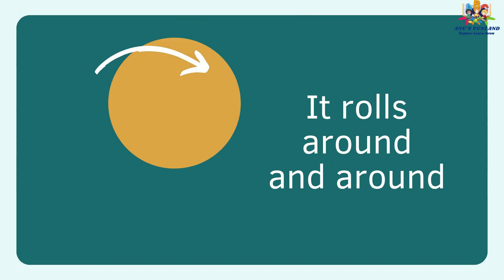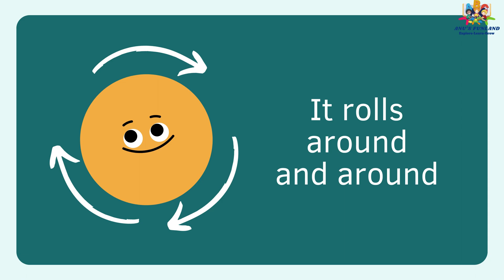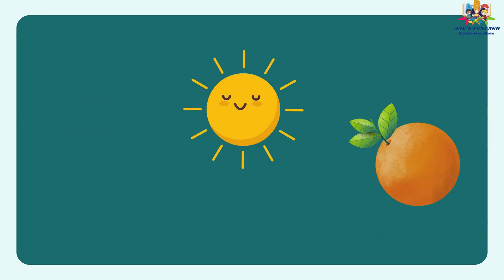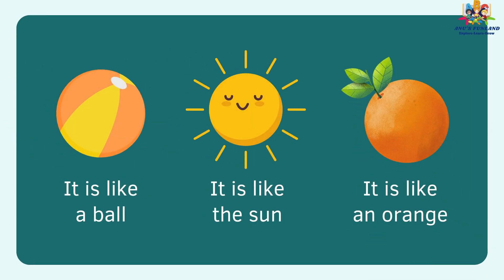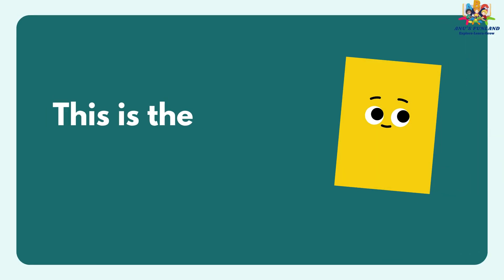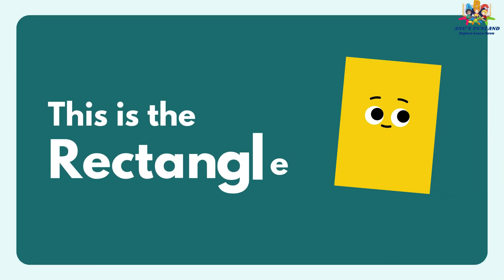It rolls round and round. It is like a ball, sun and orange. Let's learn rectangle. This is a rectangle.